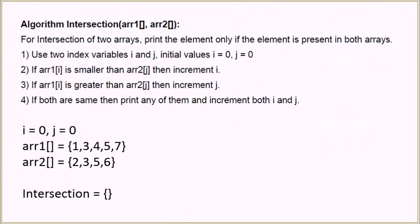Now let's look at the algorithm for intersection. The algorithm is very similar with some minor tweaks. We initialize i and j to zero and compare the same elements, but since we are only finding common elements, we print an element only when both elements are equal. Otherwise, we just increment i or j as appropriate. When both elements are equal, we print either one and increment both i and j.